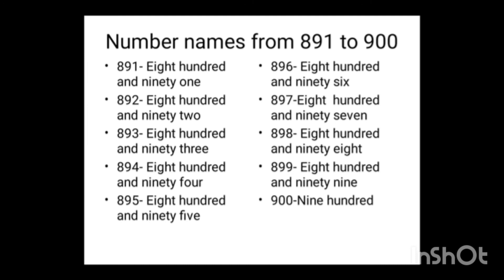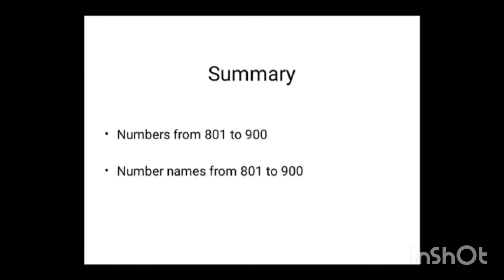In 900, how many hundreds do we have? Yes, 9 hundreds. 9 hundreds makes 900. Now let us have a summary: numbers from 801 to 900 and number names from 801 to 900. That's all.